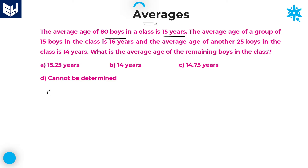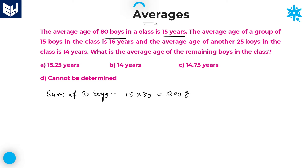So definitely you will get the sum of 80 boys. Sum of 80 boys is equal to average, that is 15, into number of boys, 80. So you will get 15 × 80 = 1200 years. That is the sum of 80 boys.